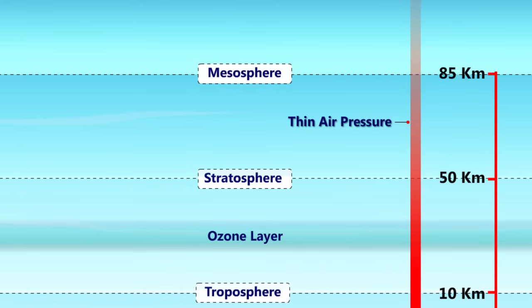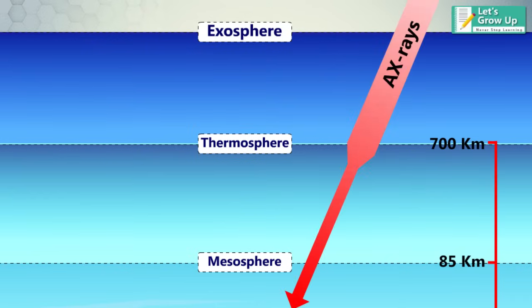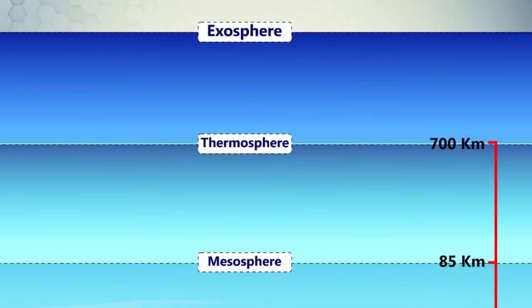The thermosphere, or ionosphere, is directly above the mesosphere and below the exosphere. It extends up to 700 kilometers, 440 miles, above our planet. The thermosphere absorbs high-energy x-rays and UV radiation from the Sun, turning atoms into ions with a positive charge. The temperature of the thermosphere varies between night and day and between the seasons.